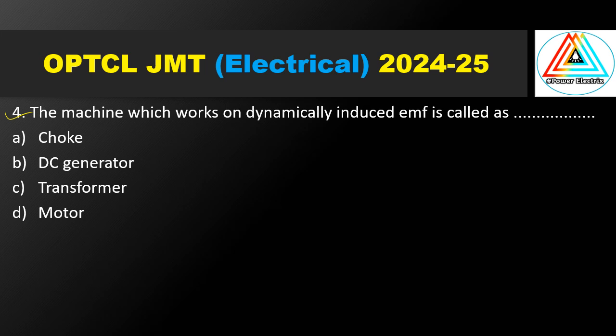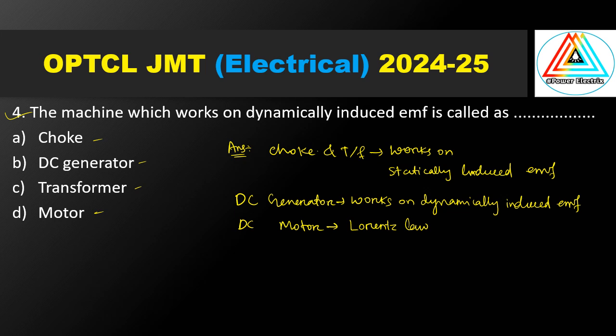Question number 4. The machine which works on dynamically induced EMF is called — options: choke, DC generator, transformer, motor. Choke and transformer have no moving parts, no rotating parts — they are static electrical devices, so they have statically induced EMF. DC generator works on dynamically induced EMF — the rotor rotates and EMF is induced. The correct answer is option B, DC generator.